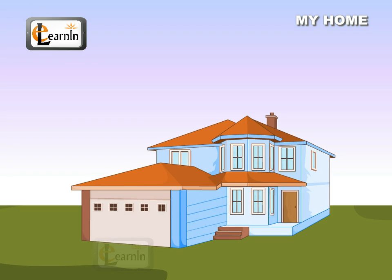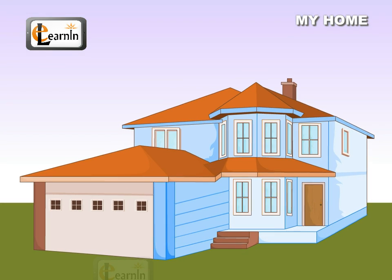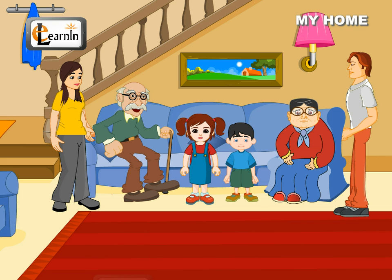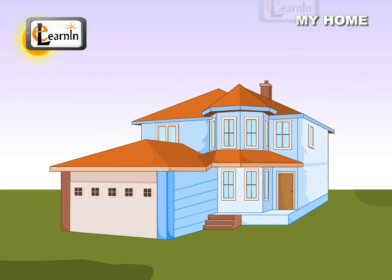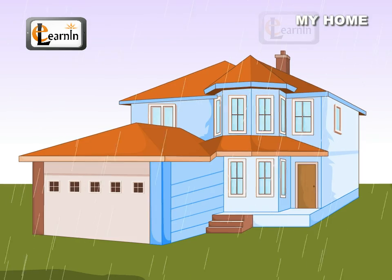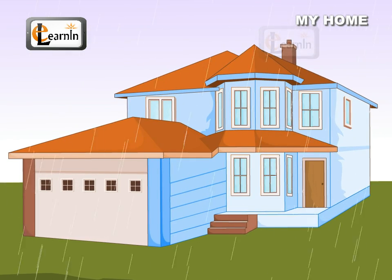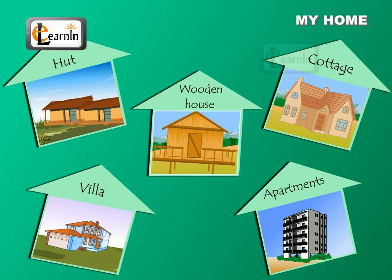A home is a place where a family lives happily together. The home provides shelter to the family from the sun, wind, rain, and snow. Different types of houses can be built depending on one's need. Ravi can choose what kind of home he wants from the following options.